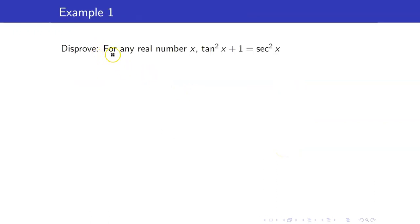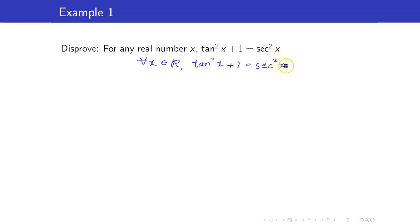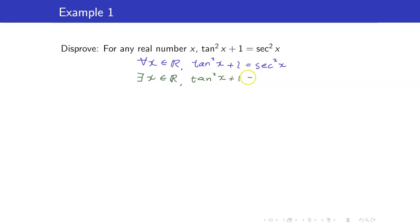For example, disprove this: for any real number x, tangent squared x plus one is equal to secant squared x. Using symbols, this is: for all x in the set of real numbers, tangent squared x plus one is equal to secant squared x. In disproving this, we just have to show a real number such that tangent squared x plus one is not equal to secant squared x. You might be thinking that this is true because this is a trigonometric identity.